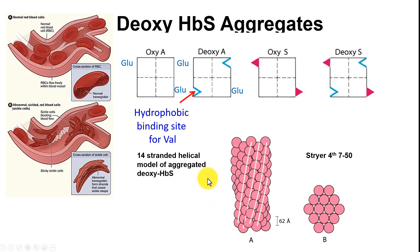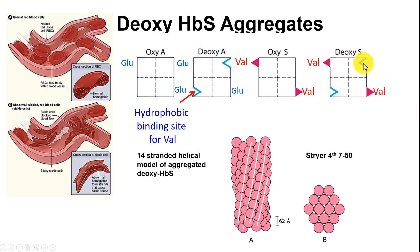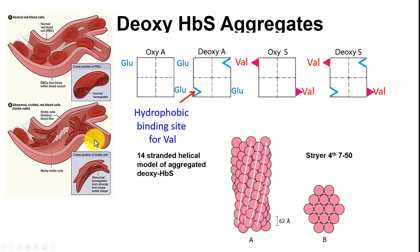Molecularly, when hemoglobin is oxygenated, there's no problem even with the mutation. When it's deoxy, hydrophobic sites appear, and the valines from corresponding deoxy hemoglobin molecules can bind and polymerize. This produces long polymers of hemoglobin inside the red blood cells — 14-strand helical aggregated deoxyhemoglobin — like needles inside a balloon, distorting the cell. The sickled cells clog arteries and capillaries. Normally red blood cells can be squeezed through small capillaries, but when sickled they cannot. This only occurs in the deoxy form.